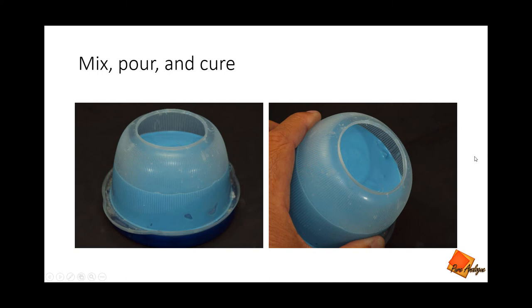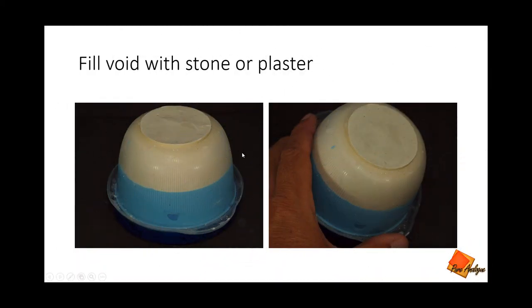What I'll do is take and pour in stone or plaster in the rest of the half. In other words, I'm void filling all of this area with just some cheap stone. It provides a rigid base for the silicone to be up against, and nothing's going to move when I go to deflask the model later.